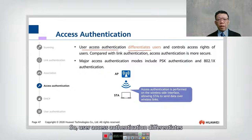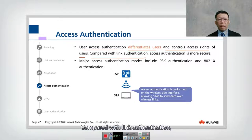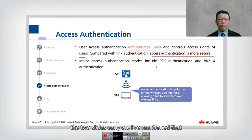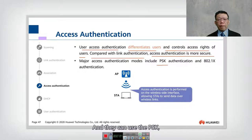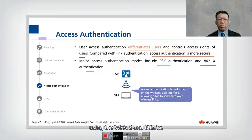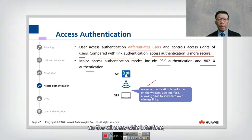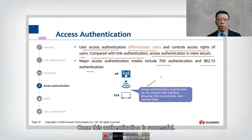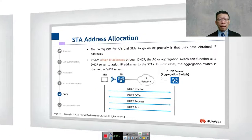Access authentication is more important than link authentication. It differentiates users and controls their access rights. WPA and WPA2 use this mode — either PSK (pre-shared key) for smaller deployments or 802.1X for enterprise environments. Access authentication is performed on the wireless side interface, allowing the STA to send data over the wireless link only after successful authentication.